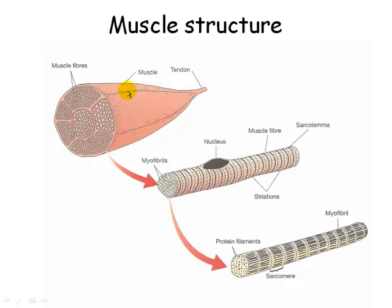Let's break this down further. Here's your tendon, which connects to the bone, and here's the muscle. Muscle consists of what are called muscle fibers. Taking a single muscle fiber and expanding it, we find it consists of what are called myofibrils — note those striations. A myofibril is made of protein filaments: actin and myosin. The repeating section within the myofibril is called the sarcomere, which we'll look at now.